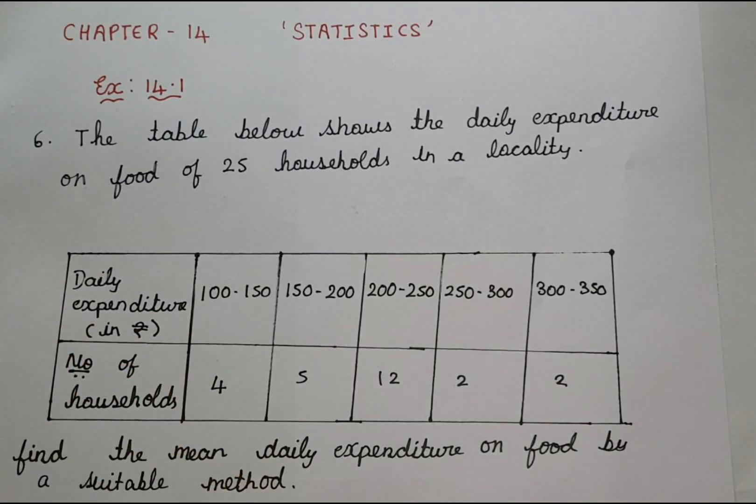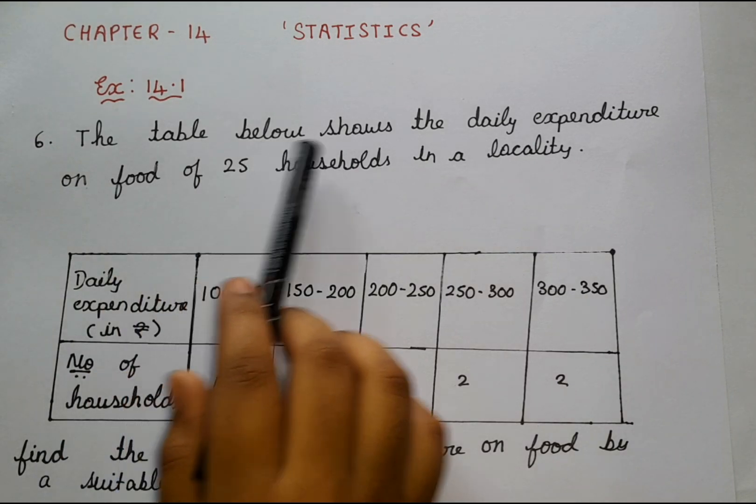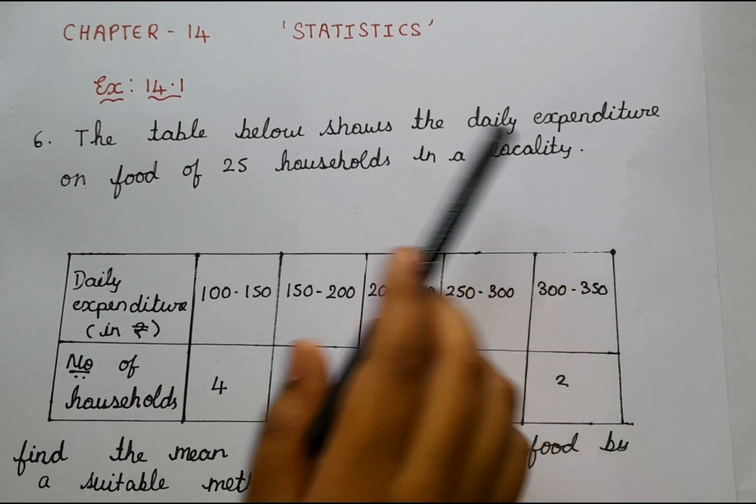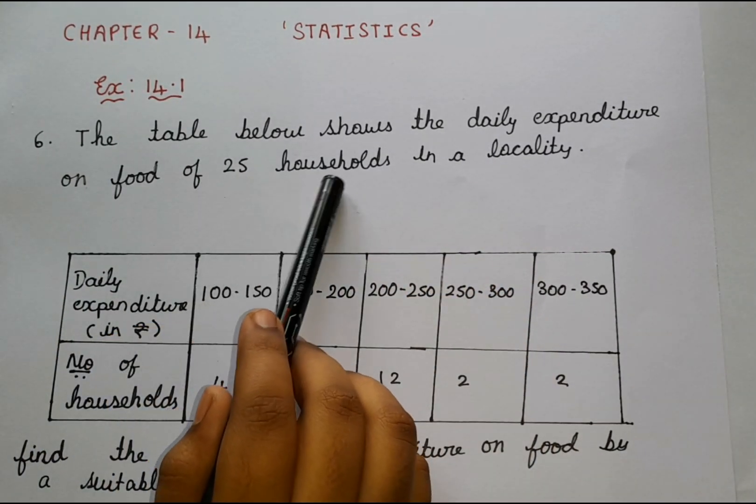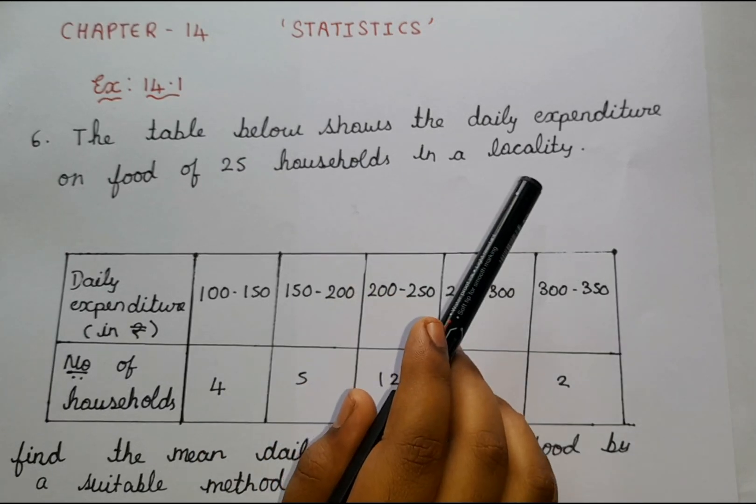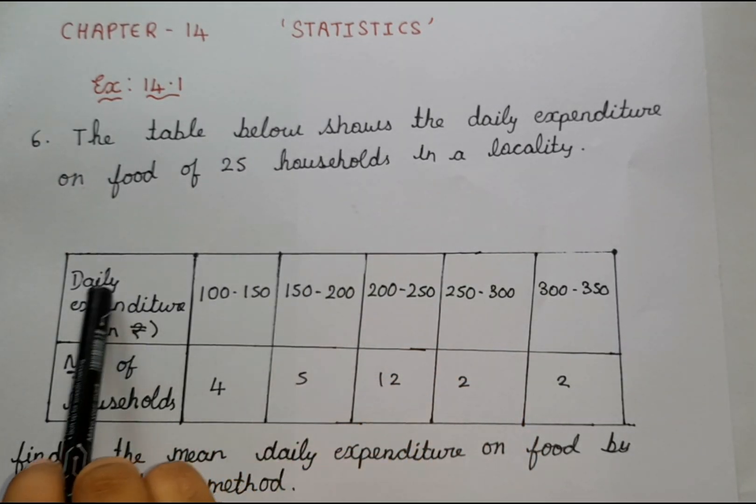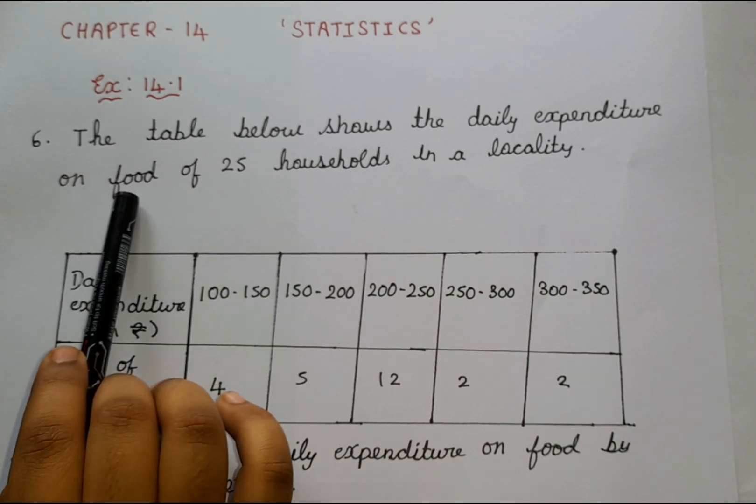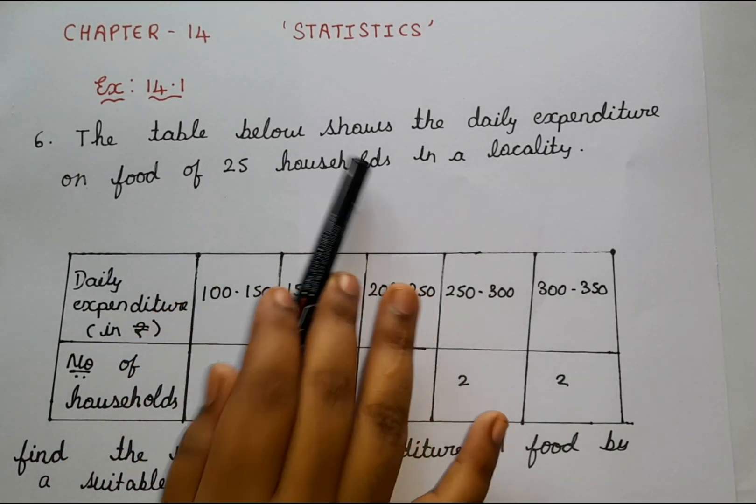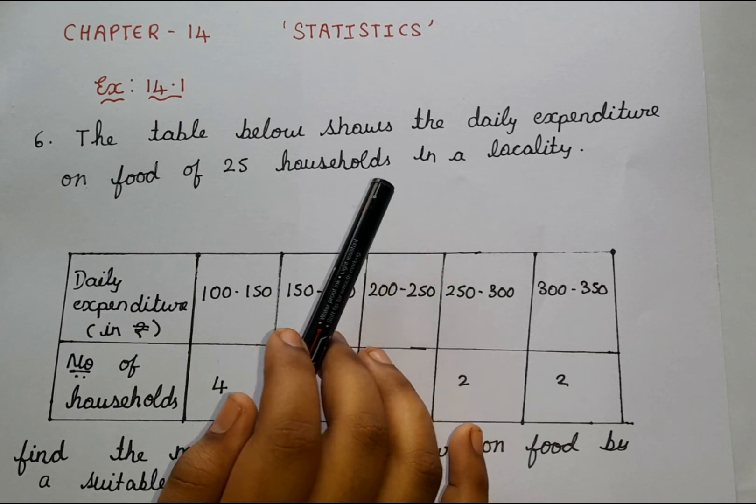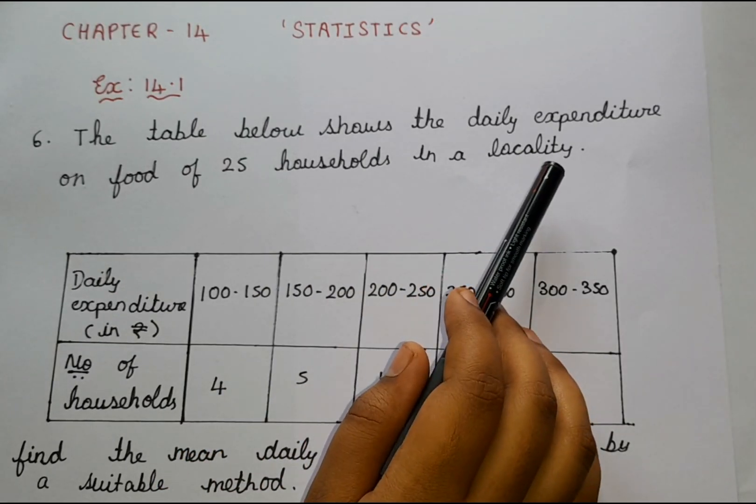Alright, now let's read the question. The table below shows the daily expenditure on food of 25 households in a locality. You guys know this is a table and this shows the daily expenditure on food for 25 households. So for 25 households, they are showing daily expenditure.